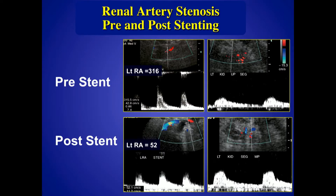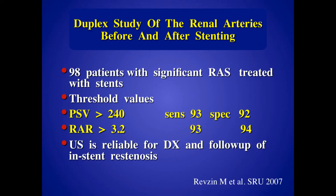I mentioned the value in renal stents — obviously we can see through the stent, see the high velocities before and after successful stent placement. You can also assess the hilar waveforms — they're abnormal pre-stent and go back to a normal appearance after successful stenting. In our study, we came up with a peak systolic velocity of 240 and a ratio of 3.2 to evaluate for in-stent restenosis in our renal arteries.